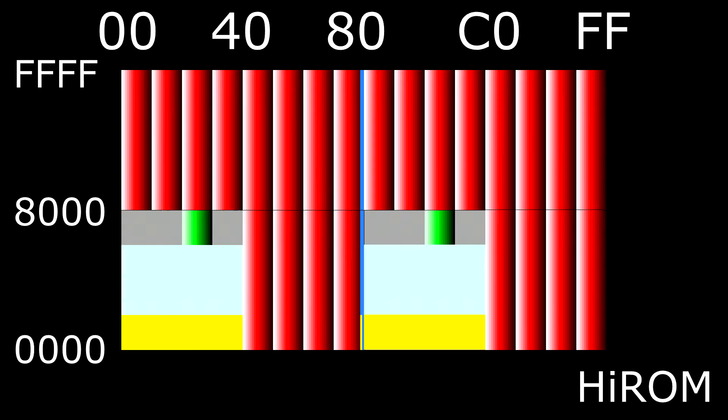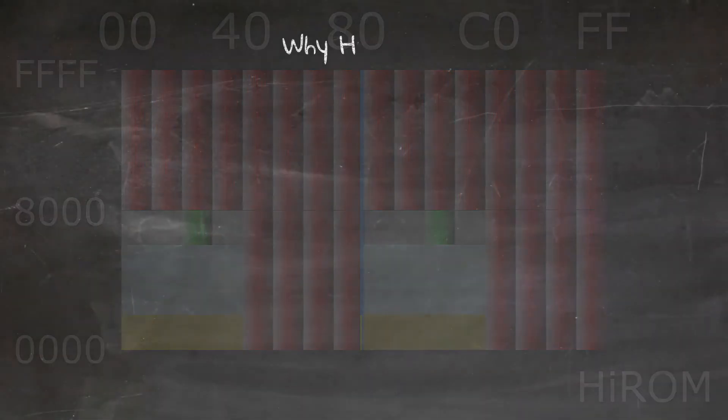What happened to SRAM? From banks $20 to $3F, SRAM now appears at $6000 to $7FFF, so you get 8k mapped per bank. Bank $20 has the first 8k of SRAM, $21 has the next 8k, and so on — this repeats as you would expect. This limits you to 256k of SRAM. Banks $FE and $FF are no longer SRAM but just the upper 128k of ROM, as per banks $3E and $3F.